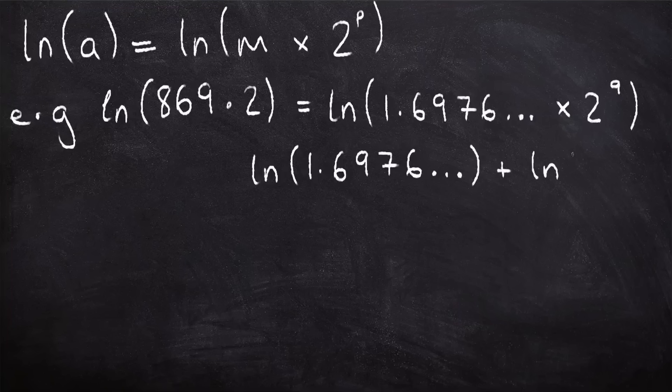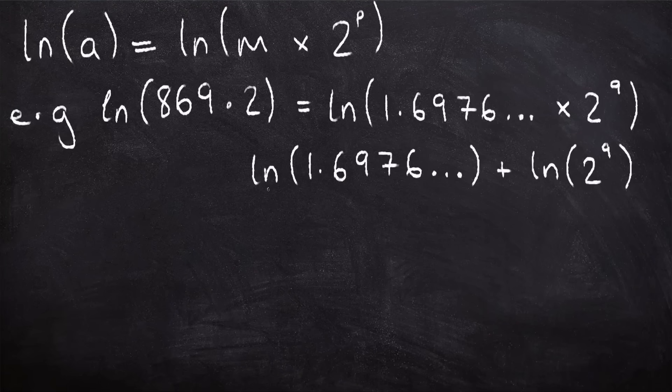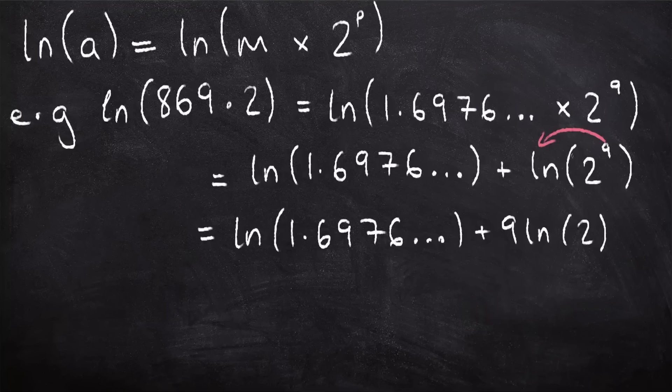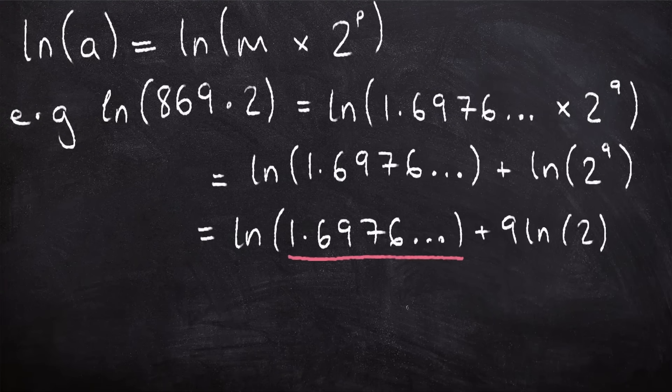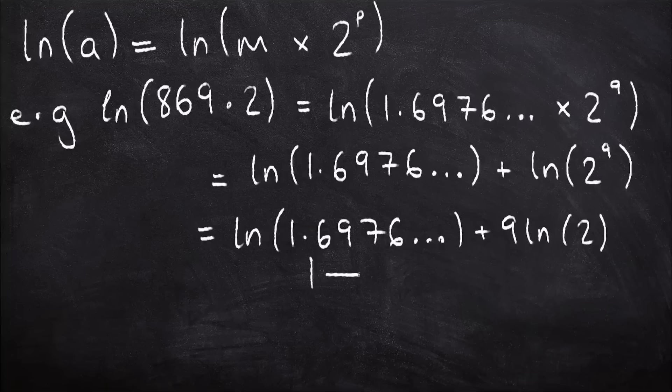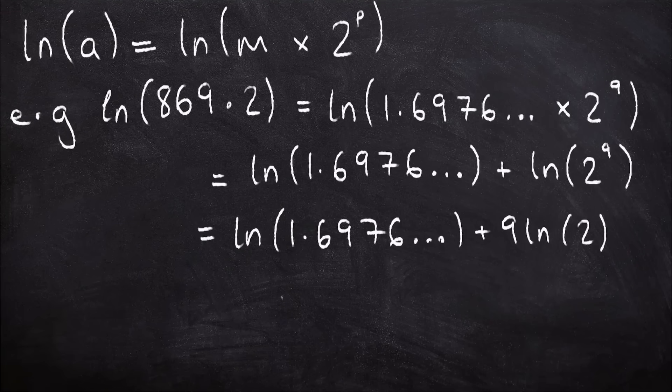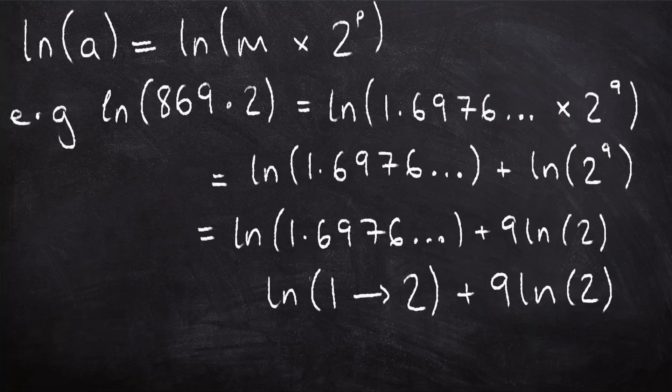That way, by using our rules of logs, we can split up the natural log here to end up with the natural log of this number plus the natural log of 2 to the power 9. We can take the 9 to the front, and we end up with ln(1.6976) plus 9ln(2). The useful thing about this is that this number here can only ever be between 1 and 2. If we store the natural log of 2, and also we store the natural log of all the numbers from 1 to 2, then we can find the natural log of any other number.